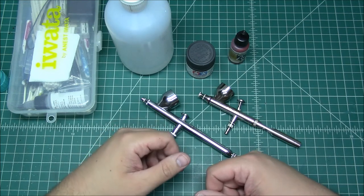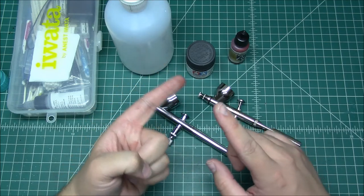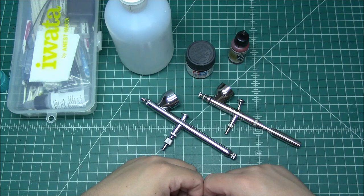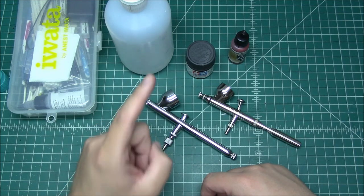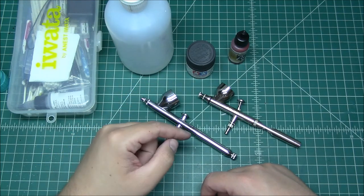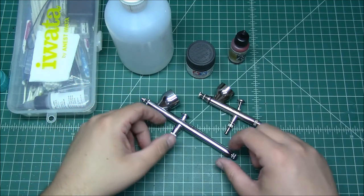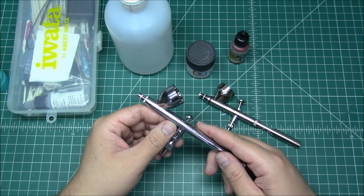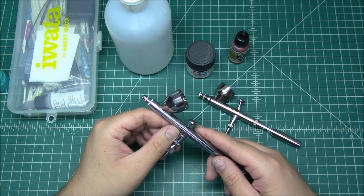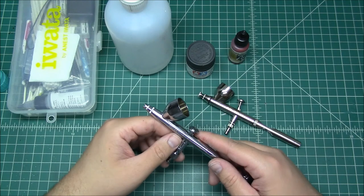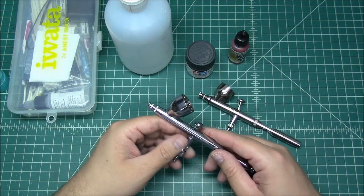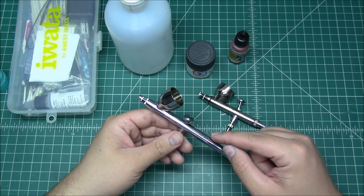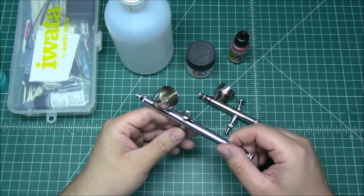Again, people say ultrasonic cleaners are good for airbrushes because they're easier and faster. They're not. It is not easier, it is not faster. We just showed that. In the amount of time it would have taken to completely disassemble this airbrush, put it into an ultrasonic cleaner, then take it out, dry it off and put it back together - not including the time that the ultrasonic had to run, but just disassembly and reassembly - we were able to clean this airbrush faster than that.